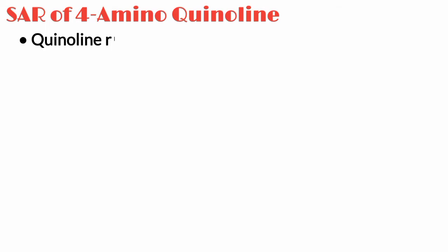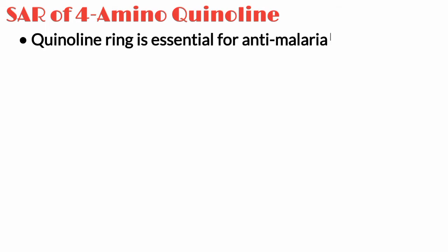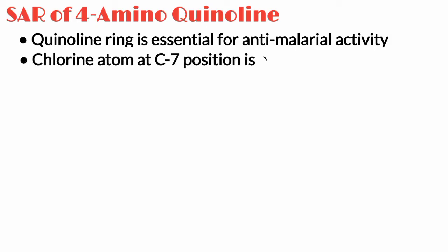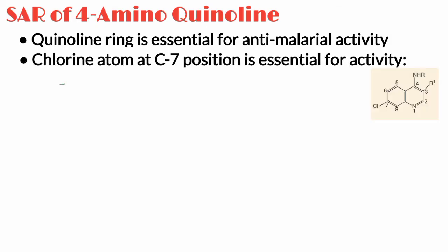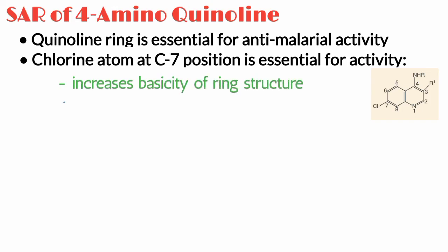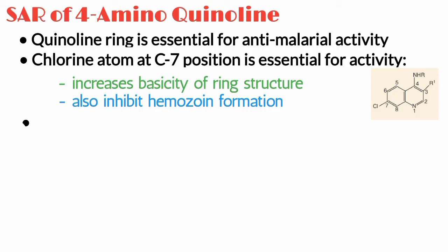The quinoline ring is essential for antimalarial activity because it helps bind the hematin enzyme. The chlorine atom at the C7 position is essential for activity because it increases the basicity of the ring structure and also inhibits hemozoin formation, thereby increasing antimalarial activity.